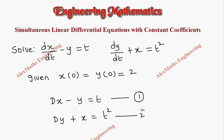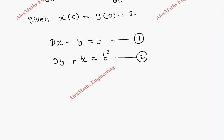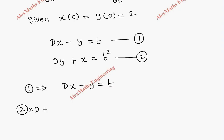Now we have to eliminate any one variable. Let's try to eliminate x. For that, I have to multiply the second equation with D, so that the dx terms can cancel. So let's write the first equation as it is — dx minus y equal to t — and for the second equation, we multiply by D, which gives D squared y plus Dx equal to D of t squared.